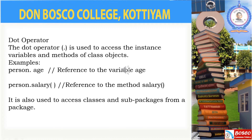The next special operator provided by Java is the dot operator, whose symbol is a full stop. It is used to access the variables and methods declared inside a class by using objects. For example, person dot age, where person is the object and age is the variable inside the class. Also, person dot salaryOf, where person is the object and salaryOf is the method inside the class.